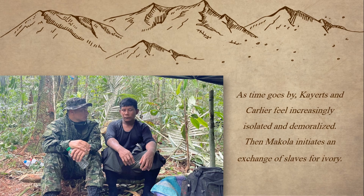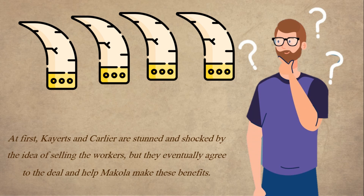As time goes by, Cajers and Carlier feel increasingly isolated and demoralized. Then McCullough initiates an exchange of slaves for ivory. At first, Cajers and Carlier are stunned and shocked by the idea of selling the workers, but they eventually agree to the deal and help McCullough make these benefits.